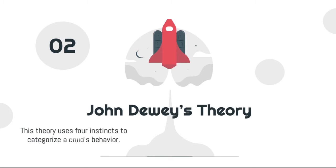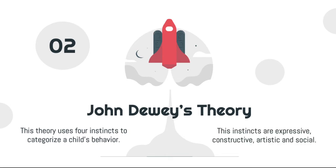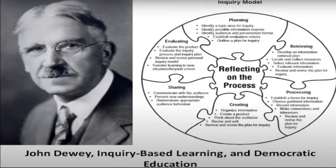2. John Dewey's theory uses four instincts to categorize a child's behavior. These instincts are expressive, constructive, artistic, and social. This is Dewey's inquiry-based learning and democratic education, wherein in the inquiry model, he reflects on processes that start with planning, identifying a topic area for inquiry, locating and collecting resources, selecting relevant information, processing to establish a focus, creating to organize information, sharing and communicating with the audience, and evaluating the product.